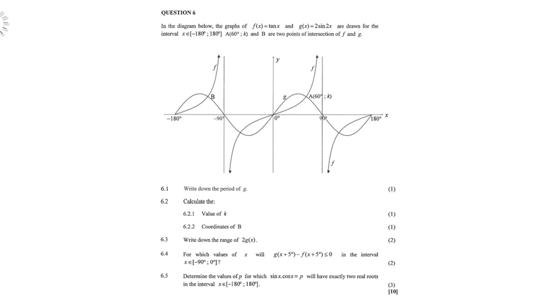6.3, write down the range of 2 times g(x). 6.4, for which values of x will g(x+45) minus f(x+45) be less than 0 in the interval negative 90 to 0. And then 6.5, determine the values of p for which sin x cos x equals p will have exactly two real roots in the interval negative 180 to positive 180.